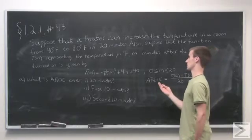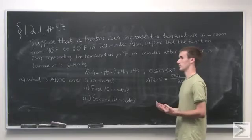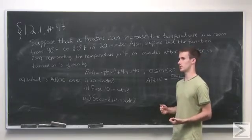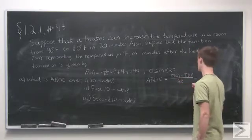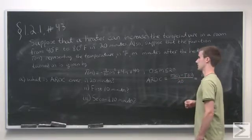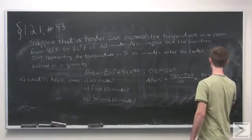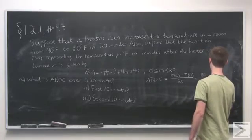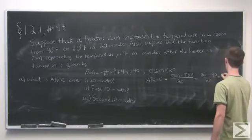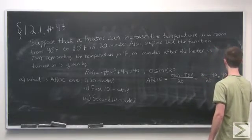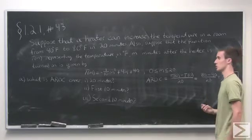We know that T(20) is 80 and T(0), the initial temperature, is 40. So we have (80 - 40)/20, which equals 40/20, or just 2.